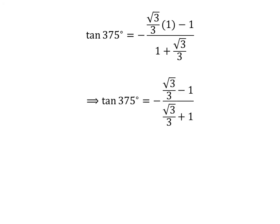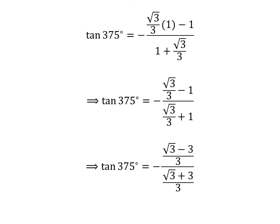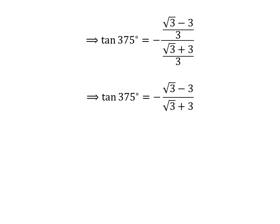Further simplification gives us tangent of 375 degrees is equal to minus square root of 3 upon 3 minus 1. Adding the fractions gives us tangent of 375 degrees is equal to minus square root of 3 minus 3 upon 3, divided by square root of 3 plus 3 upon 3. Cancelling out the common factor of 1 upon 3 in the numerator and denominator gives us tangent of 375 degrees is equal to minus square root of 3 minus 3, upon square root of 3 plus 3.